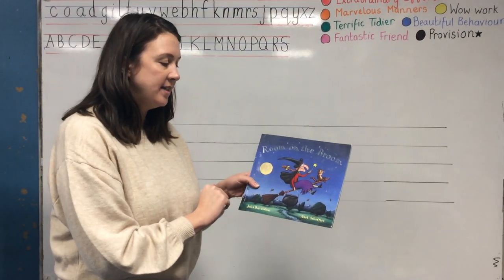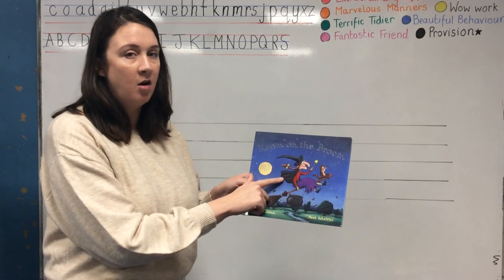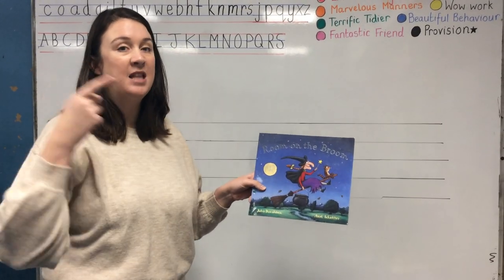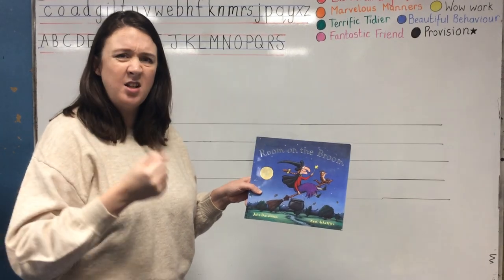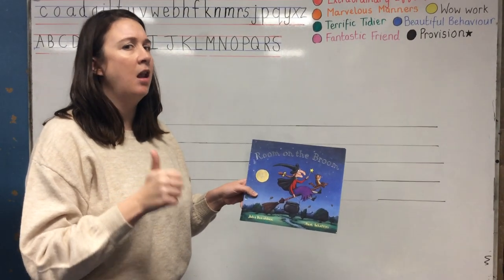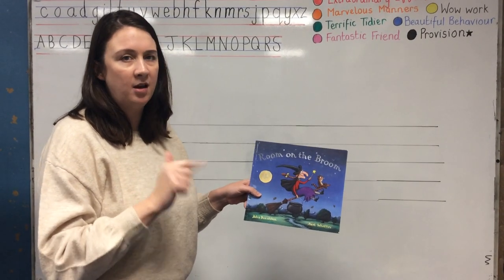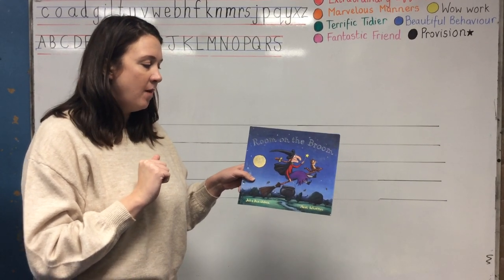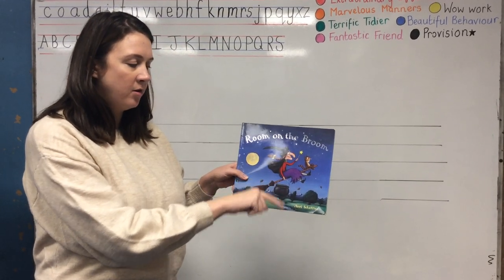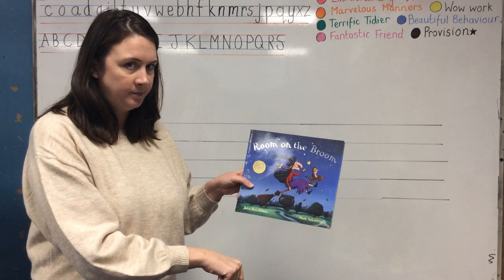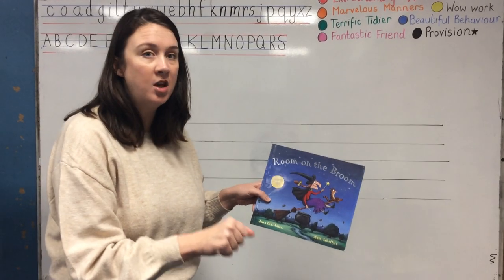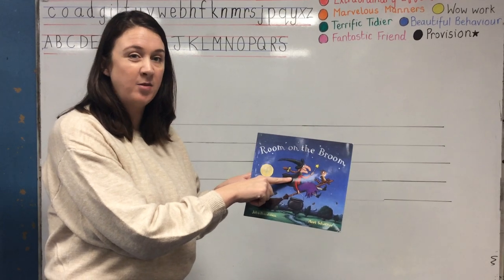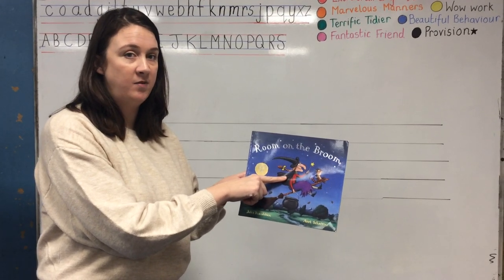I decided that she was going to lose her long black cloak, because I thought that's something that could easily fly off in the wind. And I didn't just want to say 'cloak' — I wanted to say 'long black cloak' because we've been thinking about adjectives. So she held on to her cauldron but her long black cloak flew away. That's how I'm going to write the next part of the story.